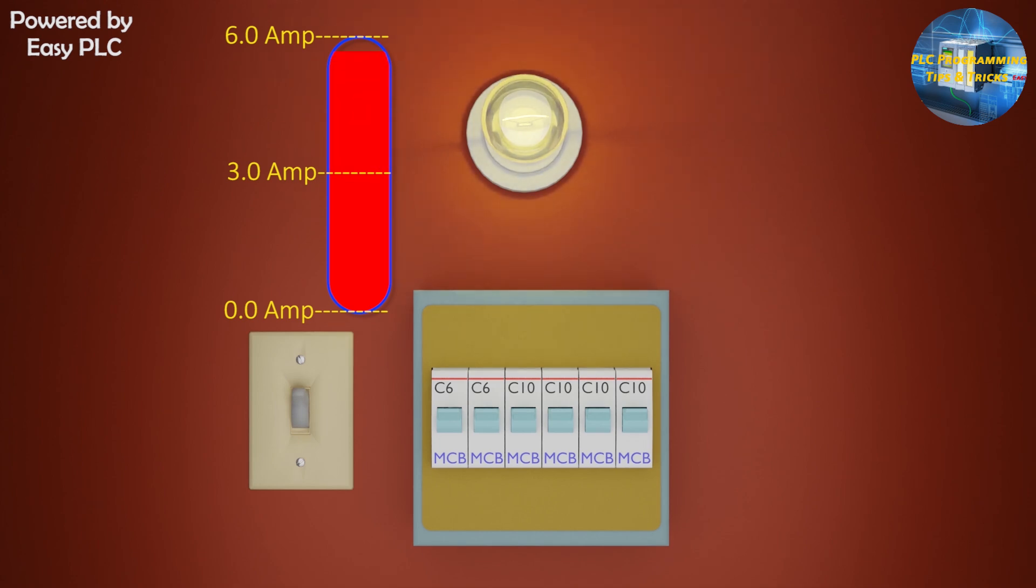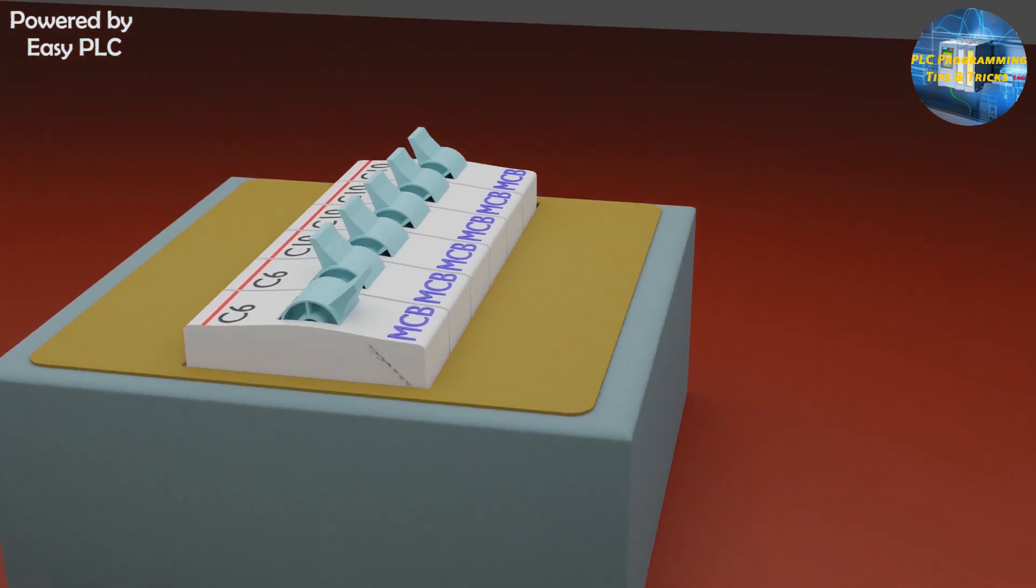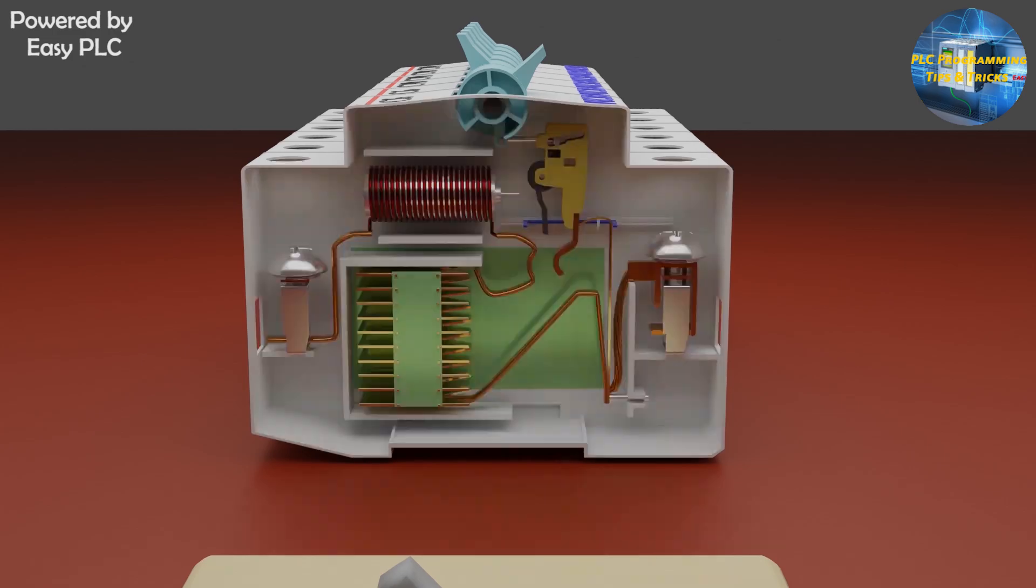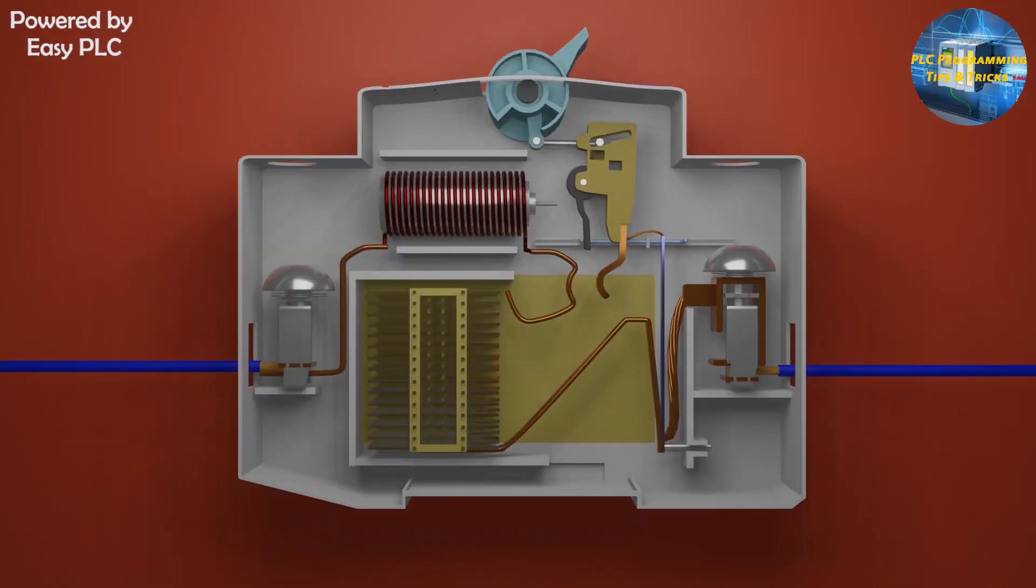...in this condition the MCB trips and saves our appliances and the house wiring and it acts like a safety device. Let's move further into this video tutorial and see how does a MCB work, what are the internal components of the MCB and how does its tripping mechanism work.